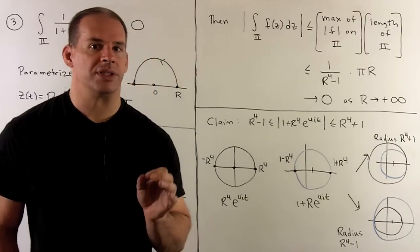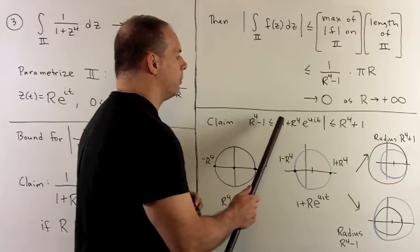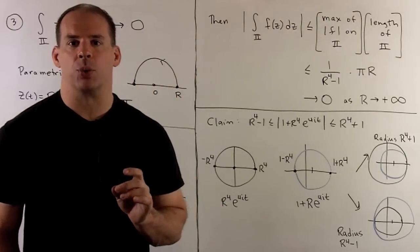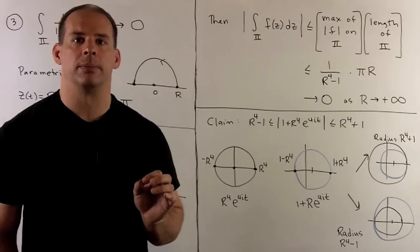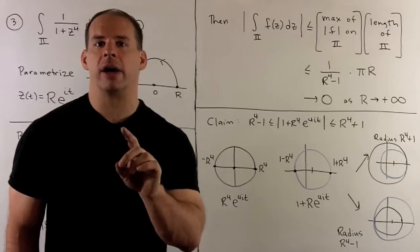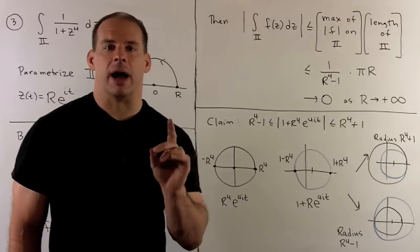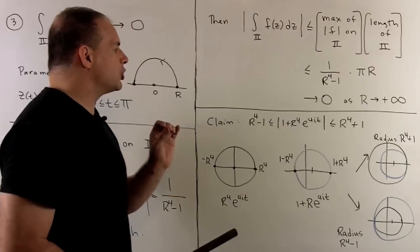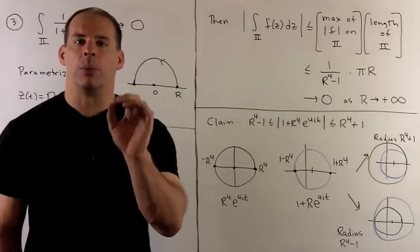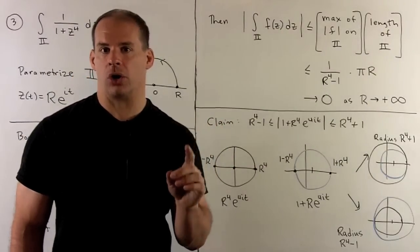To show the claim, we instead prove the equivalent statement: the modulus of 1 plus r to the 4 e to the 4 i t is between r to the 4 minus 1 and r to the 4 plus 1. So, all we've done here is move the terms from the denominator to the numerator, switch the order of the inequalities. Now, for the geometry, the modulus is just going to be the distance from our point to the origin. So, we're going to interpret this in terms of radii of circles.